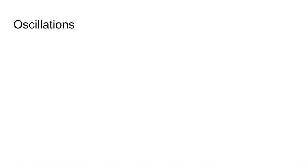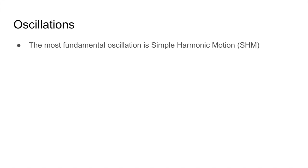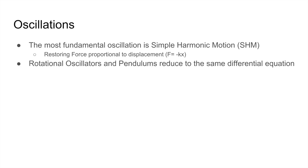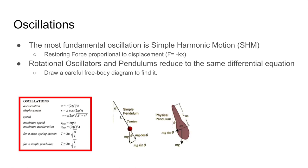Now let's move on to what I consider the hardest concept of mechanics: oscillations. The most fundamental oscillation is simple harmonic motion, defined when the restoring force is proportional to the displacement and in the opposite direction. One example is springs: F = −kx. Since F = ma, acceleration depends linearly on x, and the negative sign confirms it's a restoring force — so springs exhibit SHM. Another example is simple pendulums at small angles, where we approximate sinθ ≈ θ. Drawing the free body diagram shows that the acceleration equals a negative constant times the displacement.